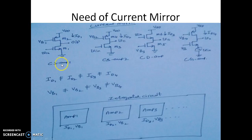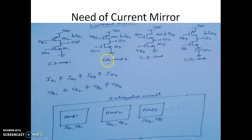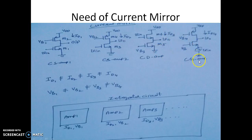Let us consider three amplifiers. One is a CS amplifier, which is an active load CS amplifier with M1 as the active device deciding the GM part, and M2 used as the load. Here is a second CS amplifier with drain current ID2, the first having ID1. We also have a CD amplifier with drain current ID3, and a CG amplifier with a different ID. So all three amplifiers have a different drain current.